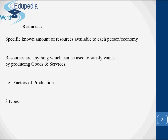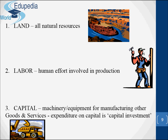A specific known amount of resources is available to each person or economy. Resources are anything which can be used to satisfy wants by producing goods and services. When we talk about the problem of scarcity, the means of fulfilling our wants are limited, and at any point the world can only produce a limited amount of goods and services, because the world only has a limited amount of resources — factors of production — which are of three broad types.